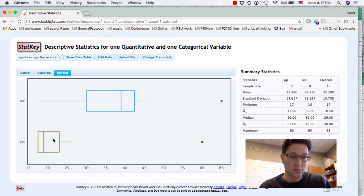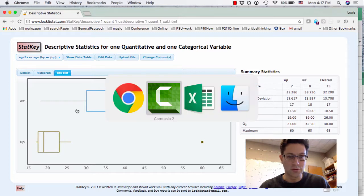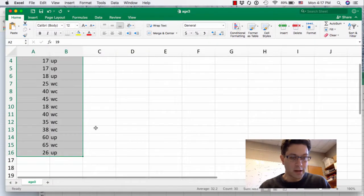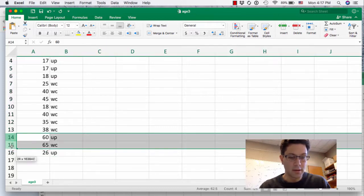If you're interested, for example, in the young people, you just go and include just those. So what we'll do is we'll just go back to our data, we'll find the outliers, there's one for UP and one for World Campus, and so we'll just take both of them and not include them.